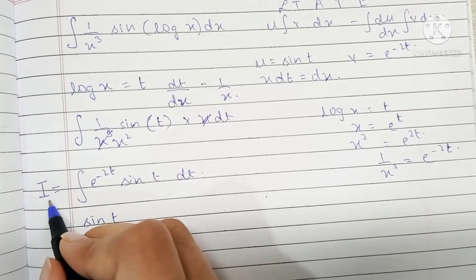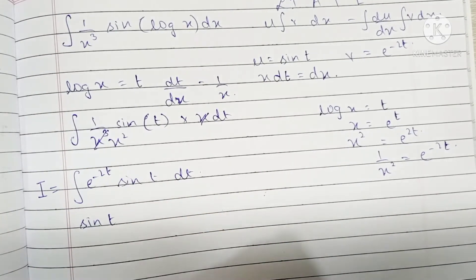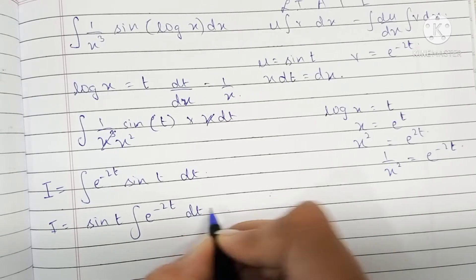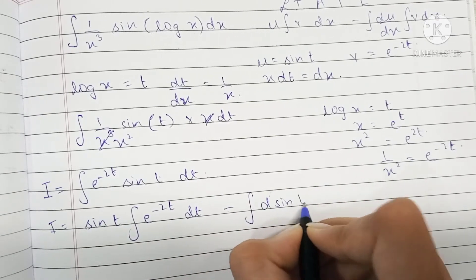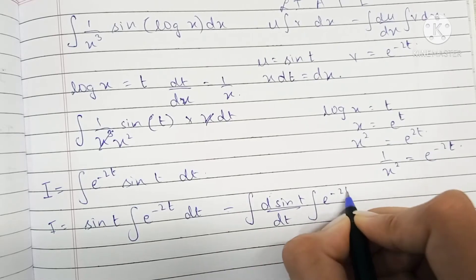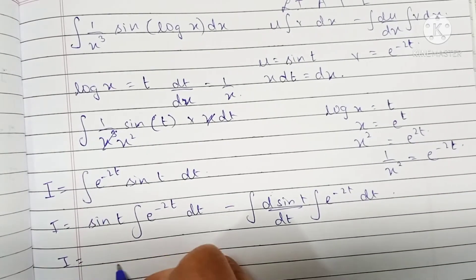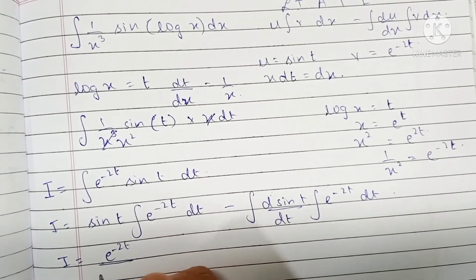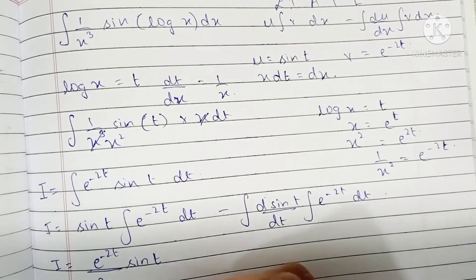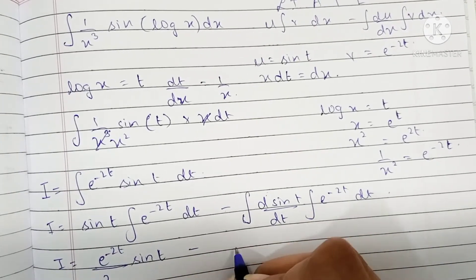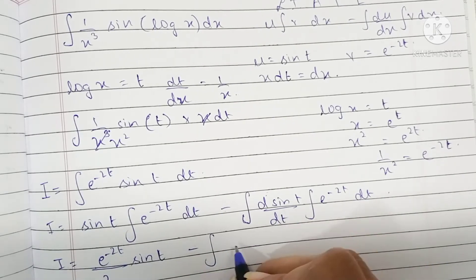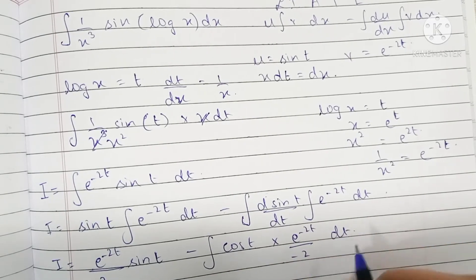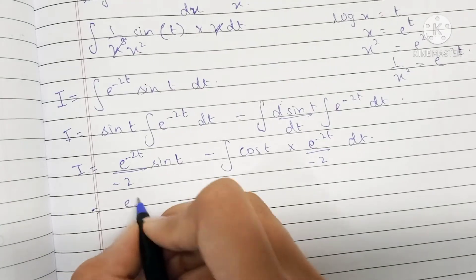So we have i equal to sine t times the integration of e raised to minus 2t dt. The integral of e raised to minus 2t dt is e raised to minus 2t upon minus 2, multiplied by sine t, minus the integral of the differentiation of sine t — which is cos t — times e raised to minus 2t upon minus 2 dt.